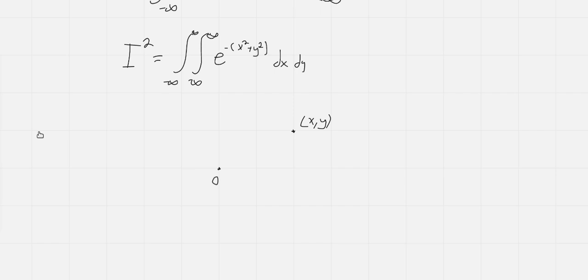Instead, in polar, you represent the coordinates by the length or the distance from the origin to the point, we call that r, and the angle that that line makes with the positive x-axis, we call that theta. So instead of x comma y we have r comma theta.